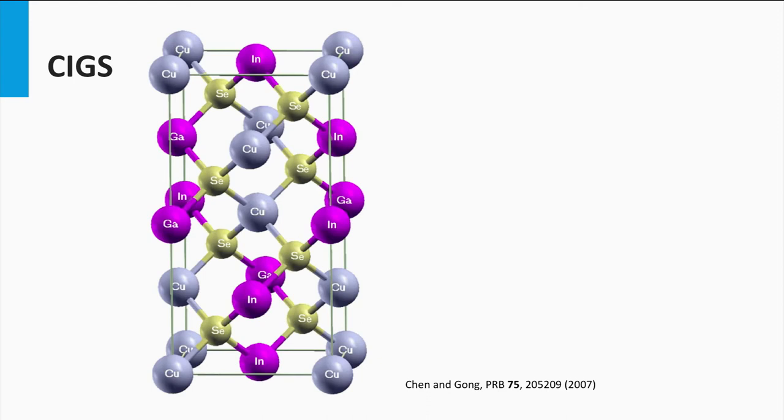They contain a polycrystalline alpha phase. The lattice atoms are tetrahedrally bonded. Such a lattice structure is a so-called chalcopyrite structure, as you can see in this illustration.